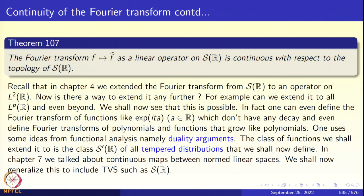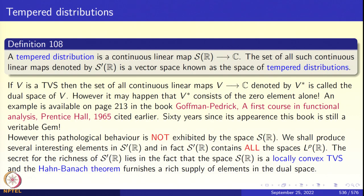What are tempered distributions? In chapter 7, we talked about continuous maps between normed linear spaces. In particular, R itself and the complex plane are normed linear spaces, so we can take linear transformations from a normed space to R or C and talk about continuity. We shall now generalize this to topological vector spaces such as S of R, the space of Schwartz functions. A tempered distribution — definition 108 — is a continuous linear map from S(R) to C.